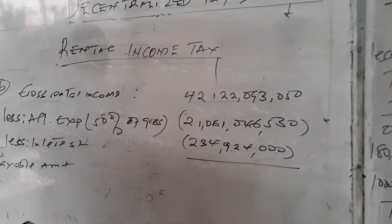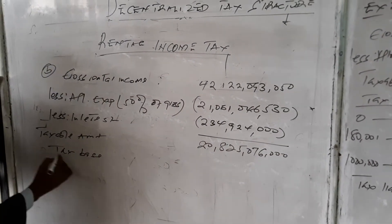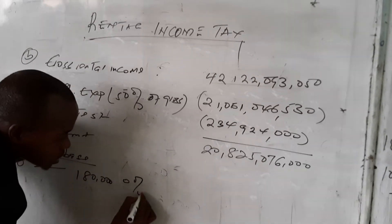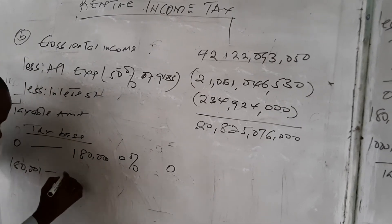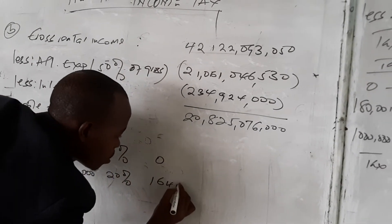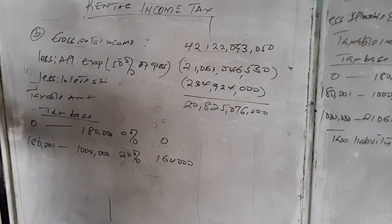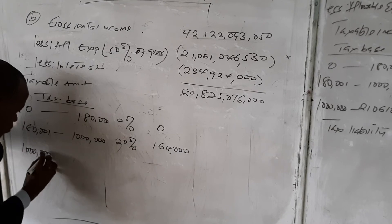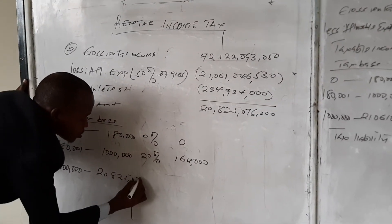So then we calculate the taxable amount. The taxable amount is 20 millions. So we need to compute the tax base: from 0 to 180 this gives 0%; from 180,001 to 1 million it is 20%, which gives 164,000. Since the taxable amount is greater than 1 million, we less 1 million first and compute 30% — that's 20 million 825,076.